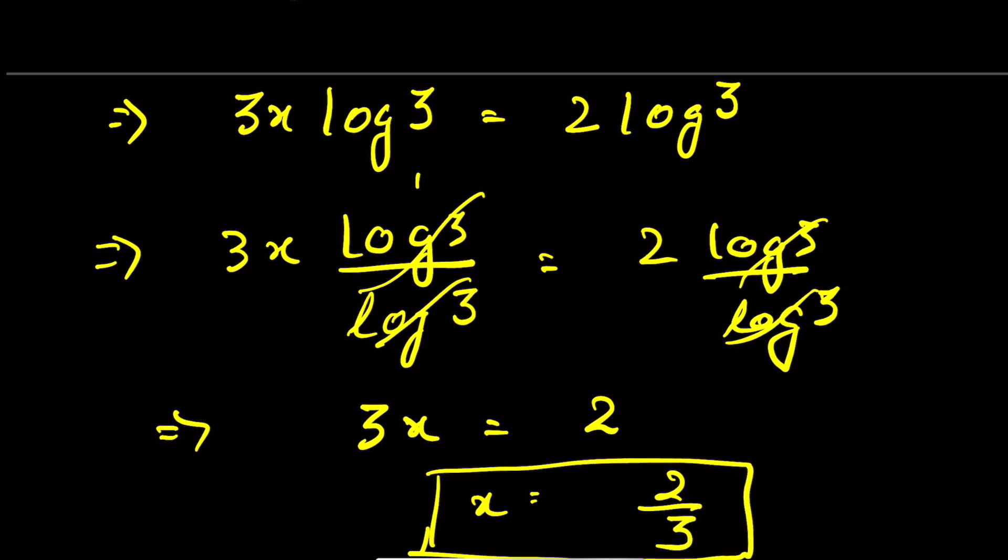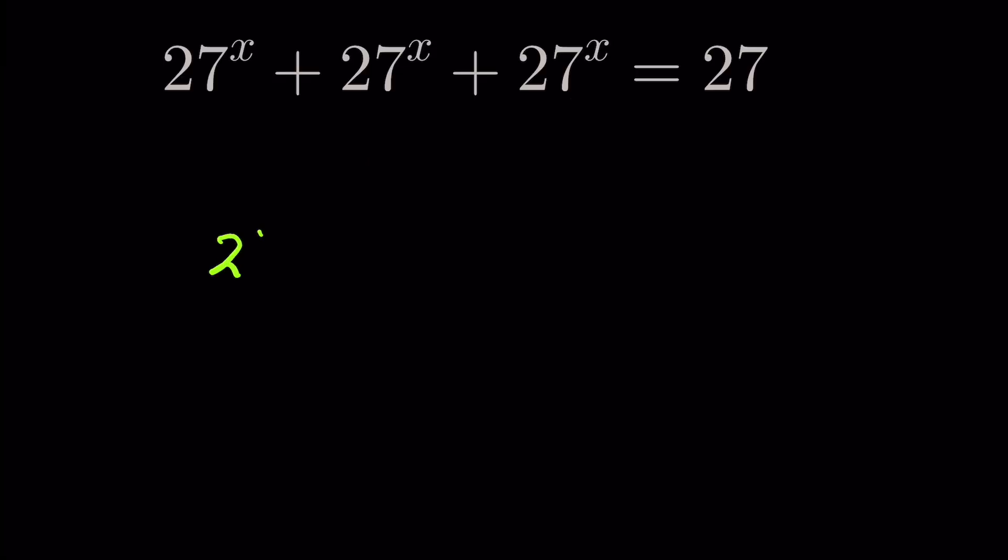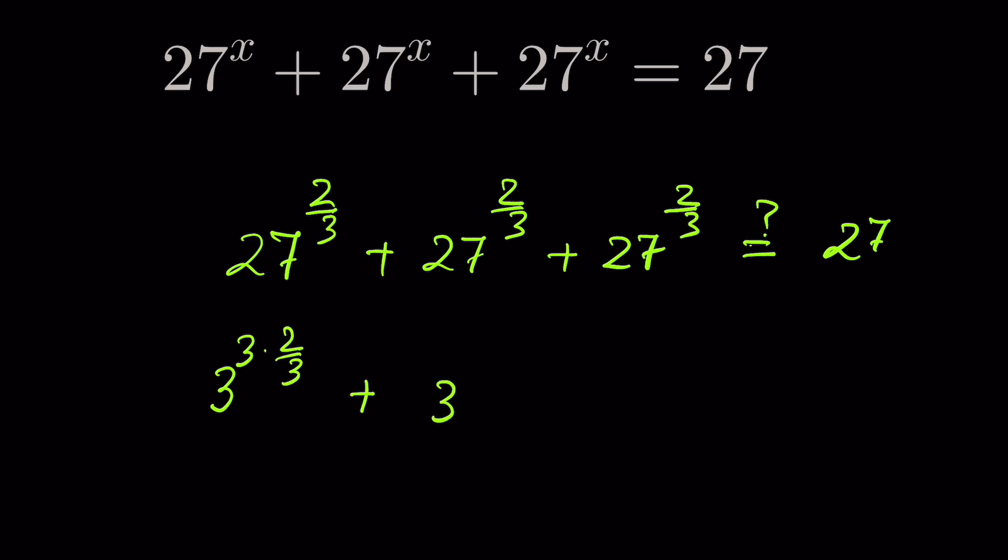Let's verify this answer. 27 x is 2 upon 3, 27 raised to the power 2 upon 3, plus 27 raised to the power 2 upon 3, plus 27 raised to the power 2 upon 3. We have to check whether it is equal to 27. So 27 is 3 raised to the power 3, then times 2 upon 3, plus 3 raised to the power 3 times 2 upon 3.